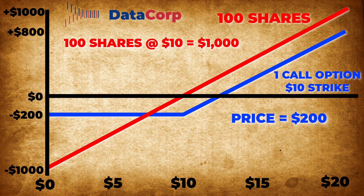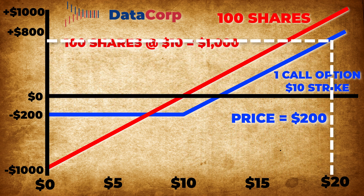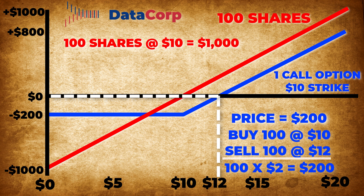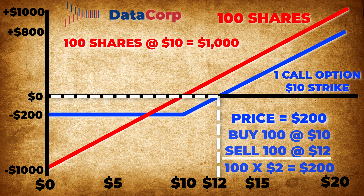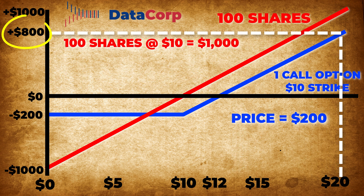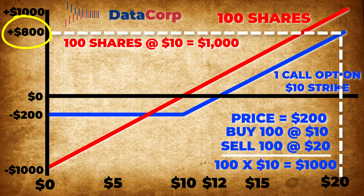If the options cost you $200, that is the most you will ever lose. But as the price of the stock goes up, so does the value of the option. Once you hit $12 per share, that's when you break even. The option costs you $200 to buy, and if you execute it, you would buy 100 shares at $10 and then immediately sell them for $12 each — $200 in total. So you pay $200 to make $200, leaving you with $0 in profit. But as the price continues to climb, you make more and more money. If the price goes up to $20, you make $800 — you can buy 100 shares at $10 but immediately sell them for $20, netting you $1,000, minus the $200 you spent on the option.